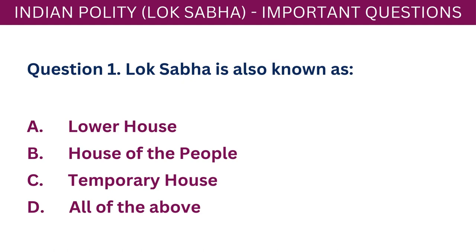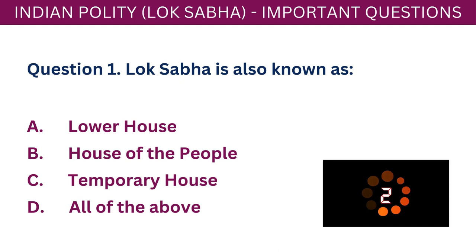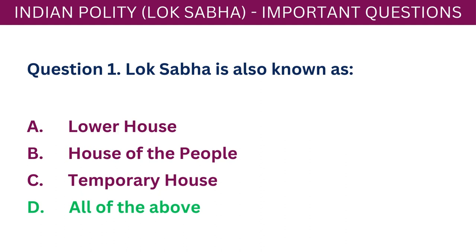Question 1: Lok Sabha is also known as. A. Lower house. B. House of the people. C. Temporary house. D. All of the above. The correct answer is D - All of the above.